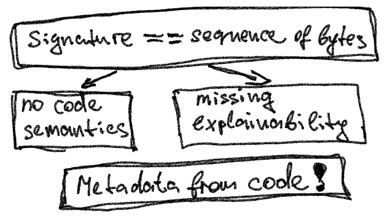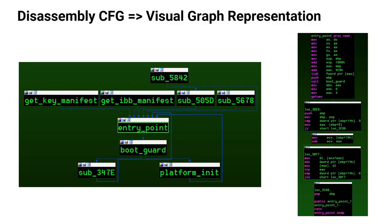Signatures are mainly byte sequences — they miss code semantics and explainability. There's no metadata from the code inside the byte sequences. The same problem applies to the first machine learning models trained to detect code: byte-sequence-based vectors like Code2Vec or Word2Vec don't contain any semantics. The detection of anomalies from these is not explainable.